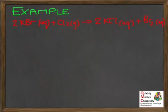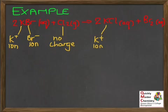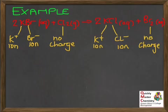Let's look at the substances involved. In potassium bromide, potassium is as a K⁺ ion and bromide is a Br⁻ ion. The chlorine is the element — no charge, the unreacted element. On the right, potassium chloride is ionic: potassium is always a K⁺ ion, chloride ions are Cl⁻. And then we have the element bromine — not an ion, no charge, neutral atoms in a molecule.